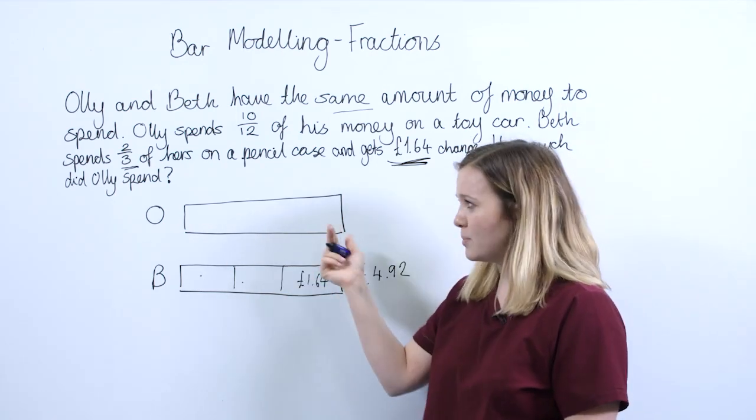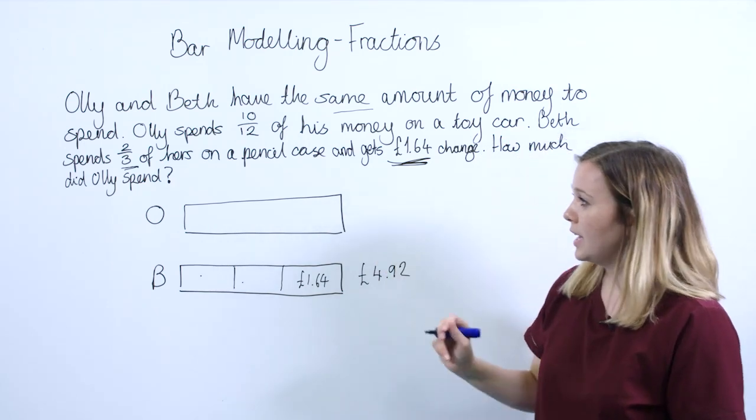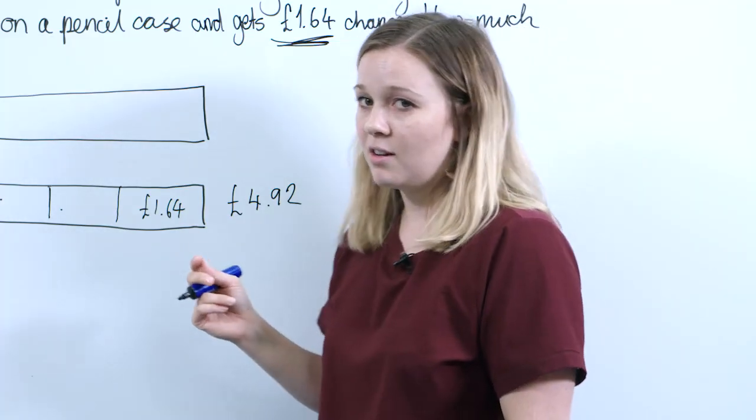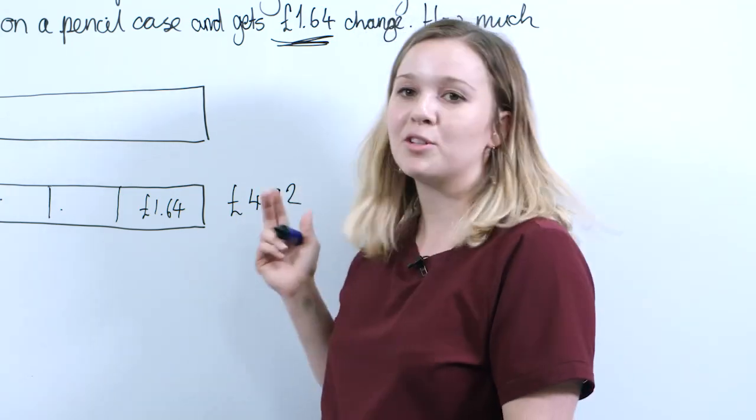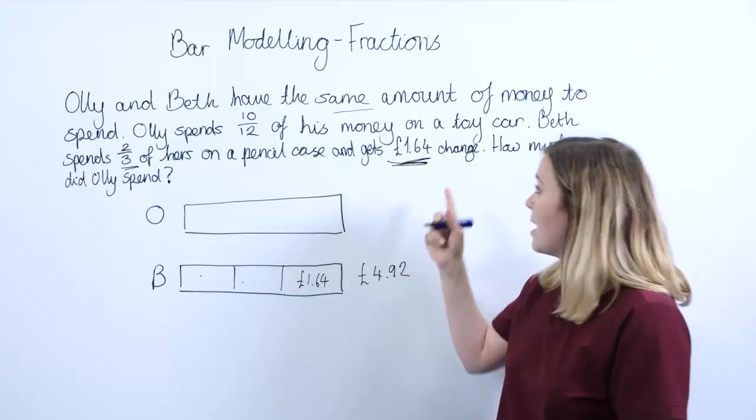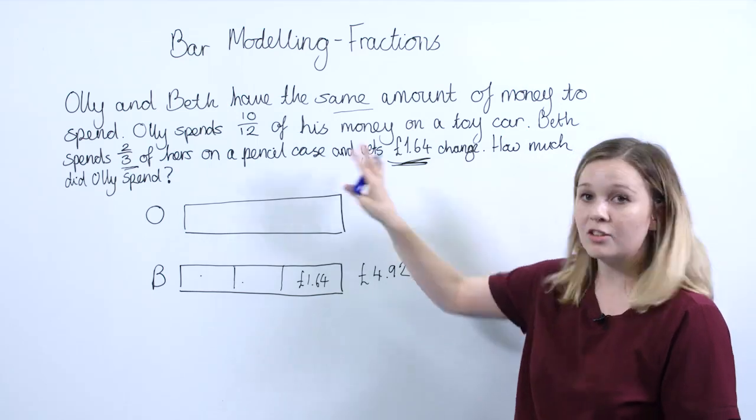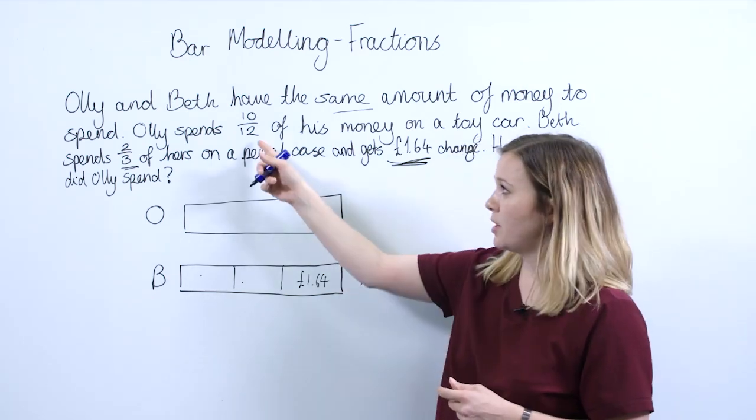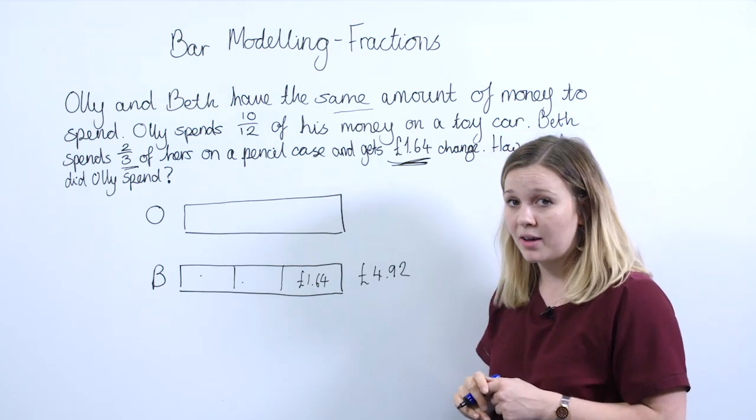So what does that tell us? You can then ask them about Ollie's bar. That means overall he had £4.92. But what is the question asking us? It's not asking us how much Ollie had to begin with, it's asking him how much he spent. So you then need to go back to the question and say, what do we know about Ollie? Let's have a look.